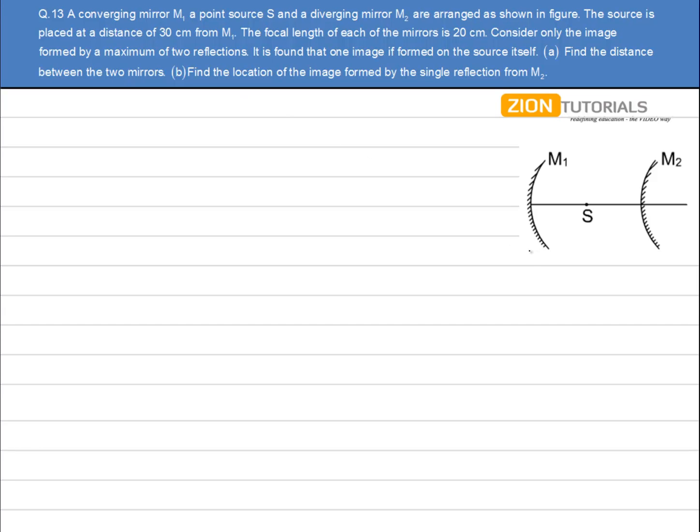Now, the object is placed at a distance of 30 cm from here. The focal length of each of the mirrors is 20 cm, that is given to me. Fine. Now, what is happening is, first of all, an object is placed over here.